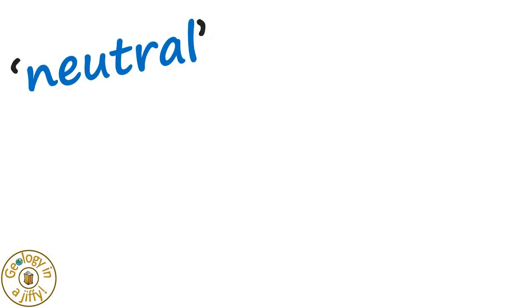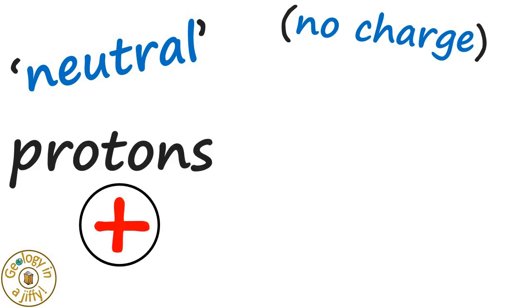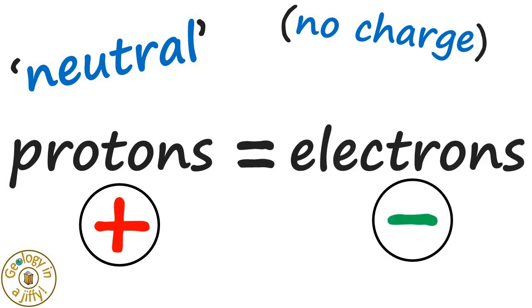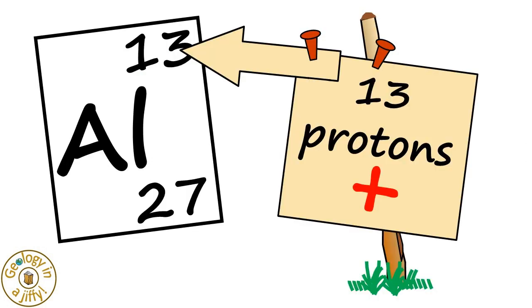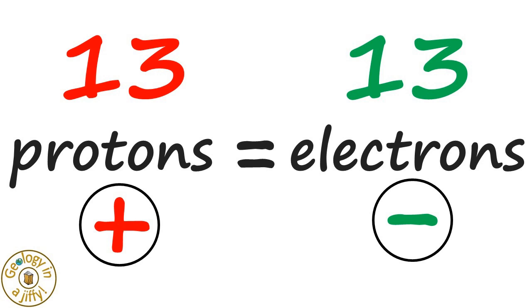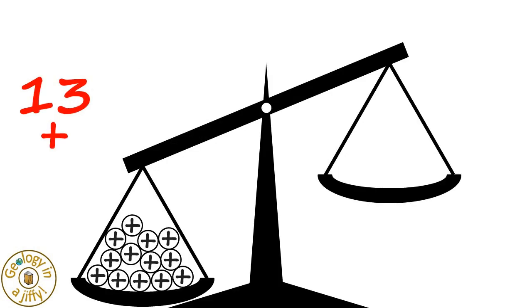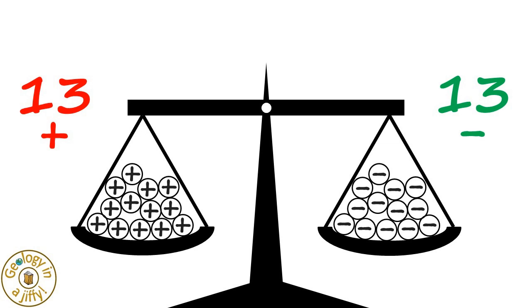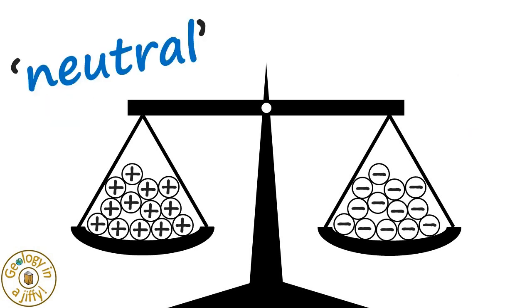And, knowing that atoms are neutral, i.e. they have no overall charge, because the number of positively charged protons balances the number of negatively charged electrons orbiting the nucleus. In aluminium, we know there are 13 positively charged protons in the nucleus, so there must therefore be 13 negatively charged electrons. So 13 protons balances 13 electrons, making the atom neutral.